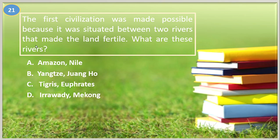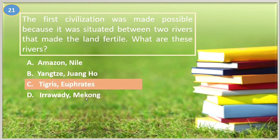Number twenty-one. The first civilization was made possible because it was situated between two rivers that made the land fertile. What are these rivers? A. Amazon and Nile, B. Yangtze and Wanghu, C. Tigris and Euphrates, D. Irrawaddy and Mekong. The answer is letter C, Tigris and Euphrates.